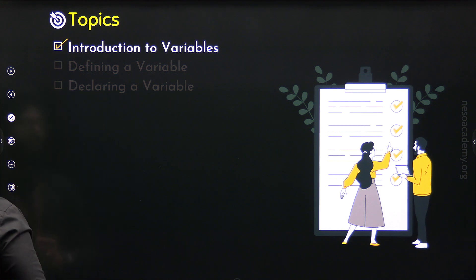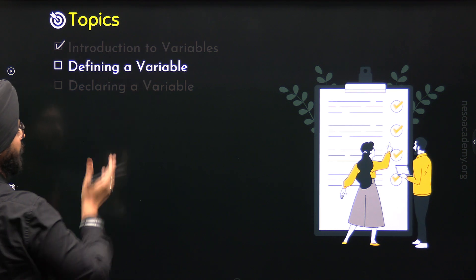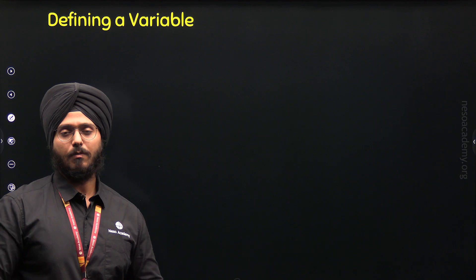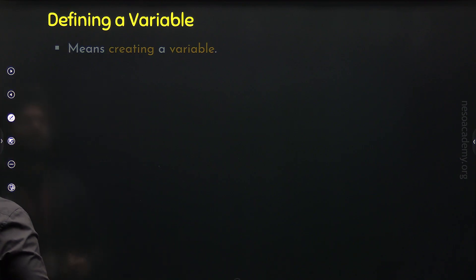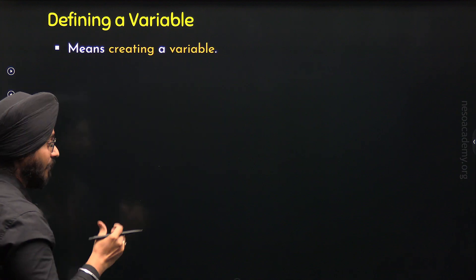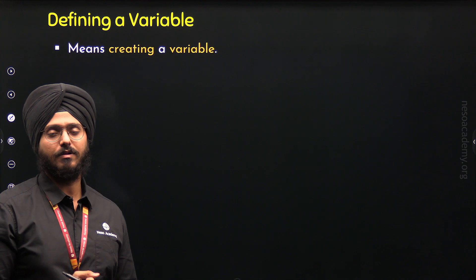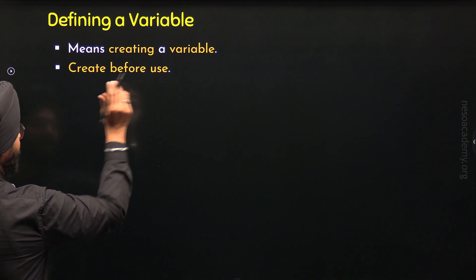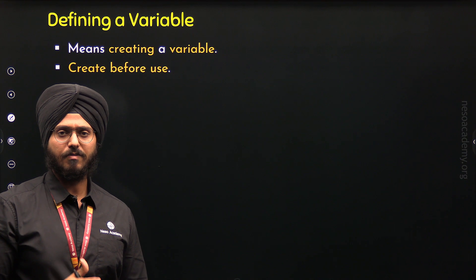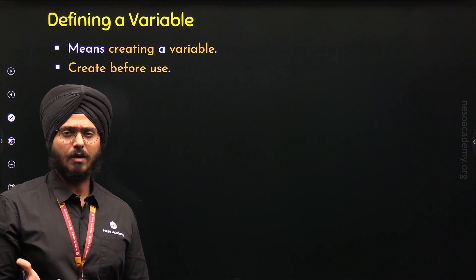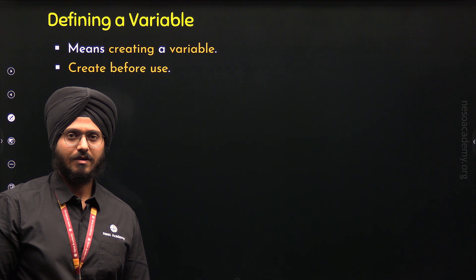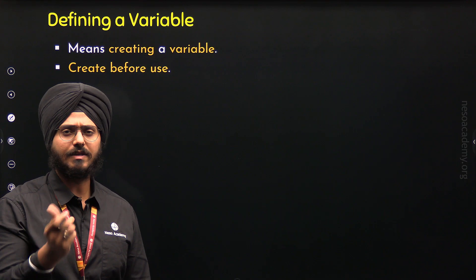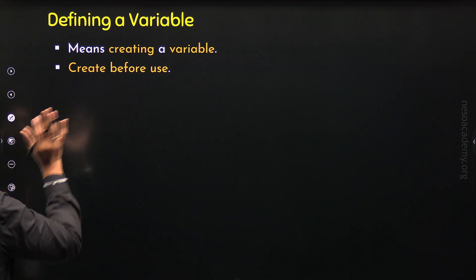Now let's move to the second topic where we will understand how to define a variable in C++. First, we will understand what is the meaning of defining a variable. Defining a variable means creating a variable. It is important to create a variable before using it — we cannot use a variable before creating it, as that does not make any sense. Otherwise, we will get an error.